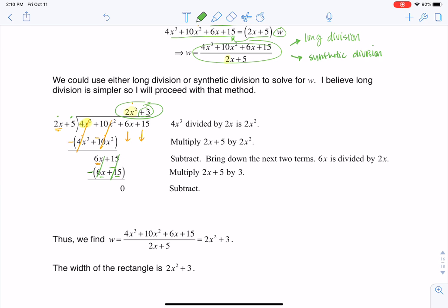And so there is the expression for my width. It's 2x squared plus 3. I did the division, found the width. All right, thanks so much. See you later. Bye.